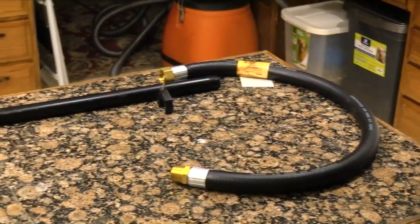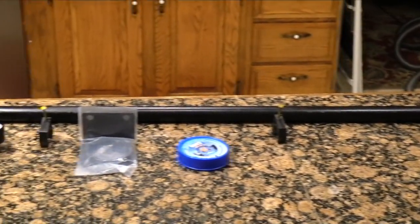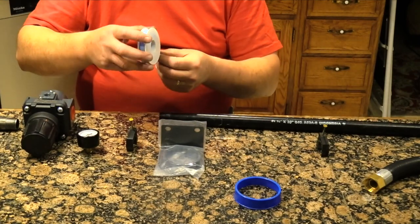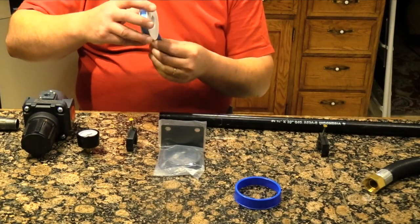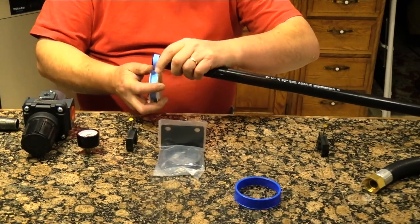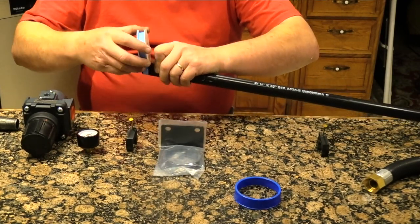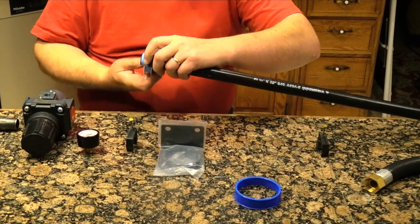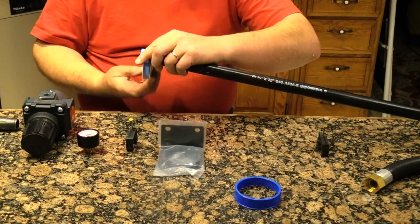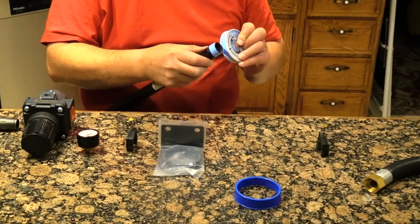I methodically laid out all the components of the wall mounted manifold. Then I began my assembly line process by wrapping all the male threads with teflon tape. I held the tape with my thumb and then unspooled the tape backwards around the pipe pulling tightly as I went. To prevent leakage three full wraps around the pipe are recommended.